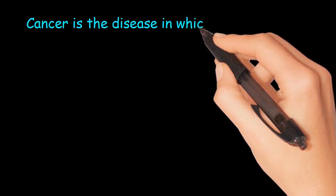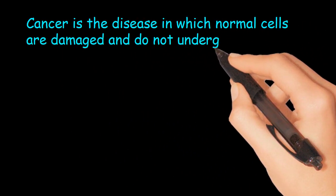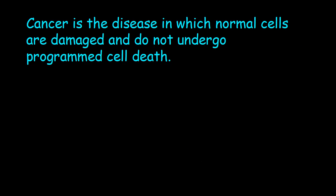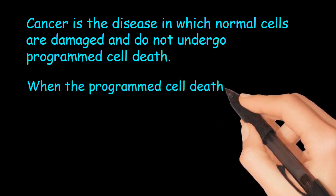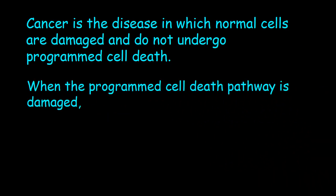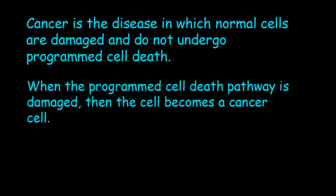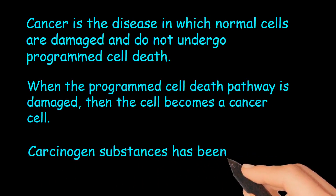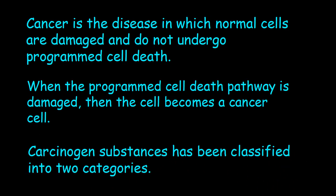Cancer is the disease in which normal cells are damaged and do not undergo programmed cell death. When the programmed cell death pathway is damaged, the cell becomes a cancer cell. Carcinogen substances have been classified into two categories.